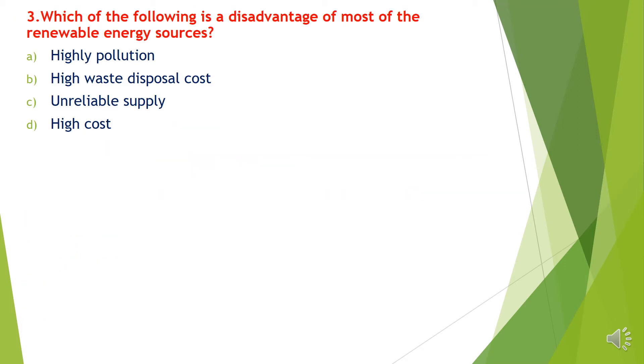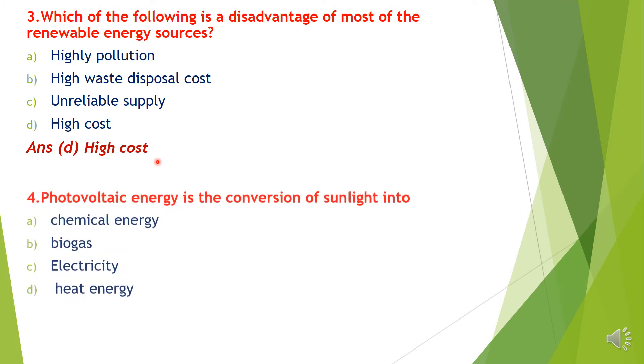Question 3. Which of the following is the disadvantage of most of the renewable energy sources? Option A. Highly pollution, B. High waste disposal cost, C. Unreliable supply, D. High cost. Answer: Option D, High cost.